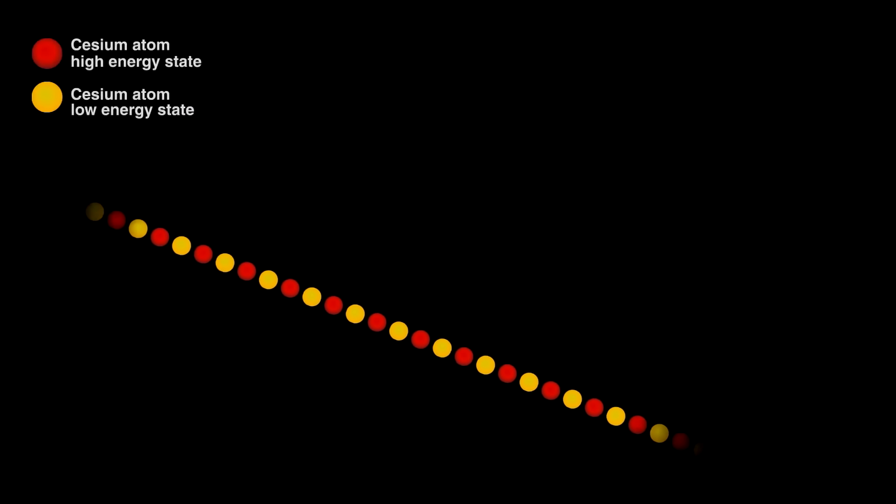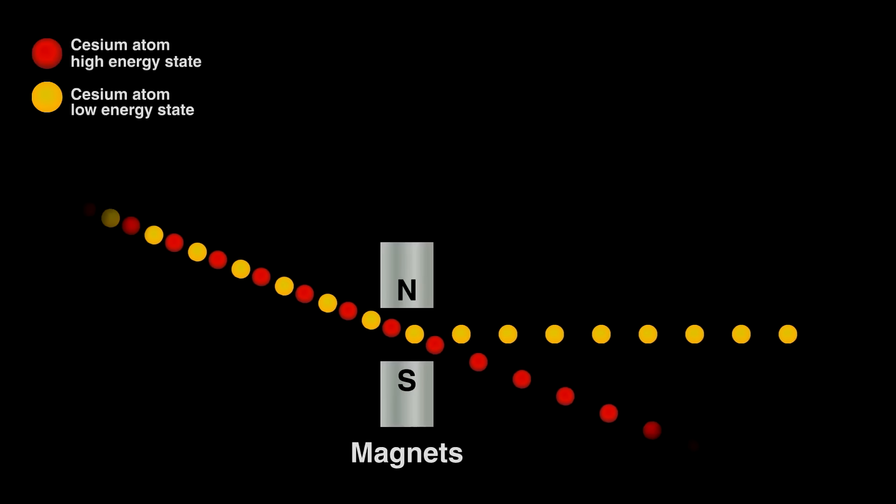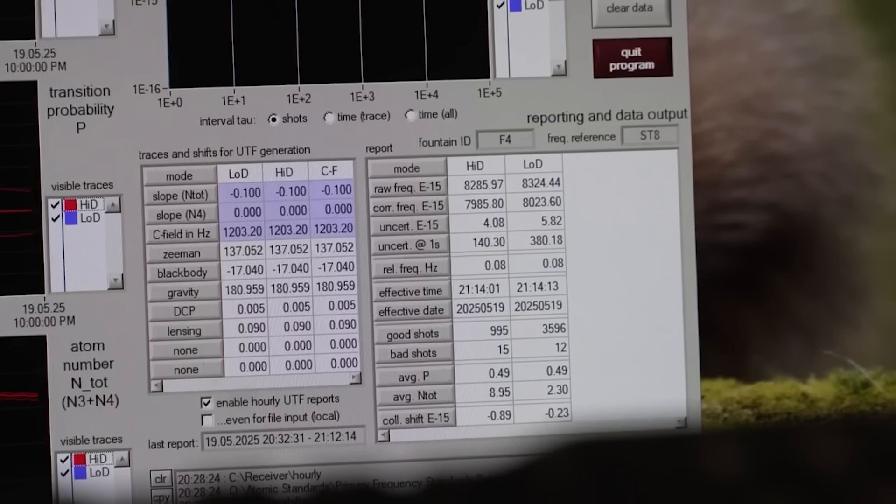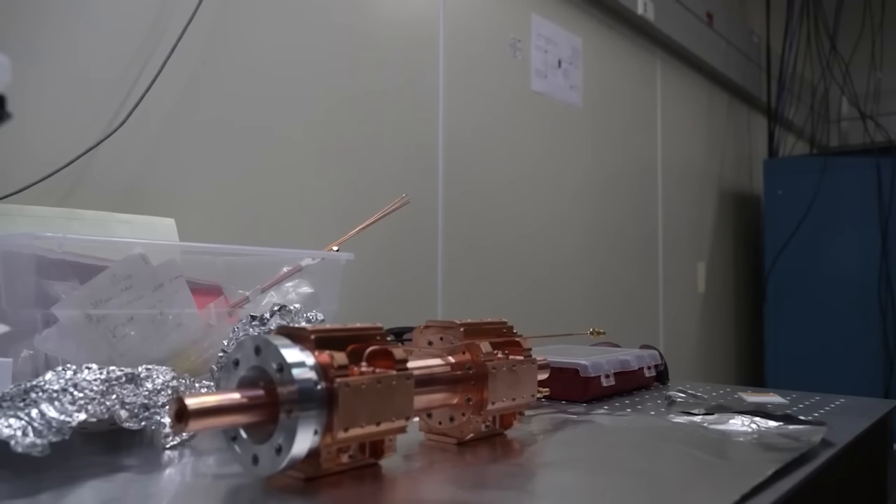Atomic clocks are the most accurate clocks humans have ever built. They measure the tiny, super-consistent jumps electrons make inside atoms — usually cesium or strontium — and every jump is like a perfectly timed tick. So accurate that over billions of years, they barely drift a second. But even these so-called perfect clocks aren't actually perfect. Scientists have discovered something called quantum jitter: the atoms have a little randomness to them, so their ticks aren't exactly the same every time. We just can't make a completely flawless clock. To get around it, scientists are experimenting with entangling the atoms — linking them so their tiny errors cancel each other out, making a super clock that's even more accurate. But the point is, even at the tiniest scales, time is not perfectly clean.